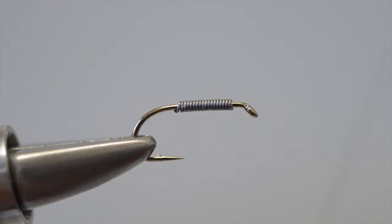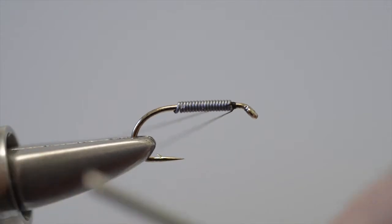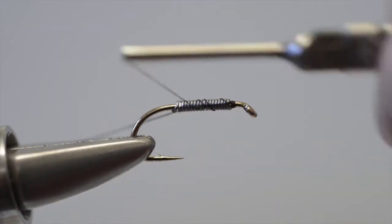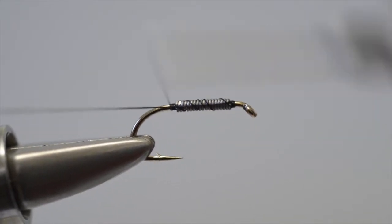To fix them in place we take the tying thread, run that on at the eye, then keeping the loose end in place, wind the thread over the top, finishing at the bend.